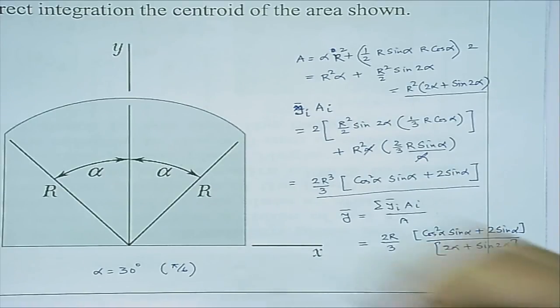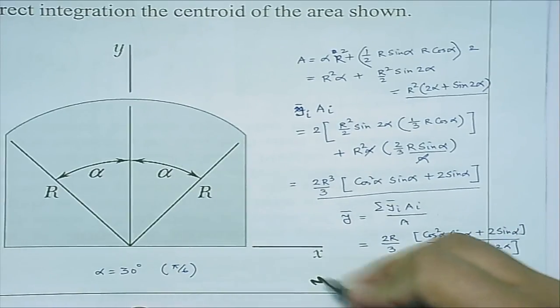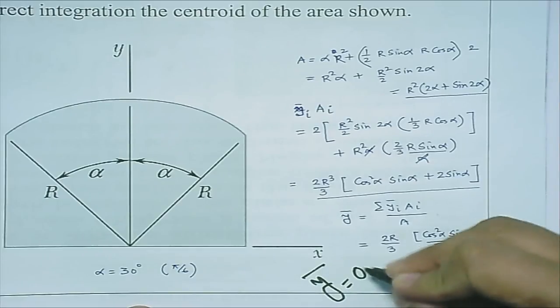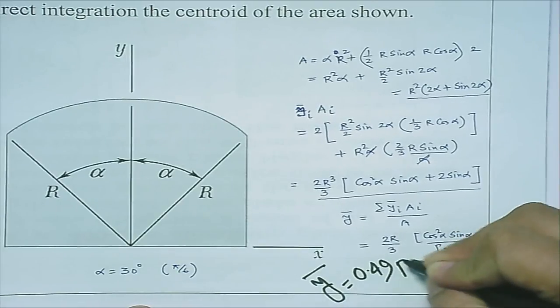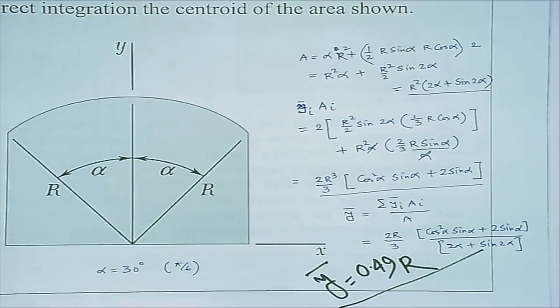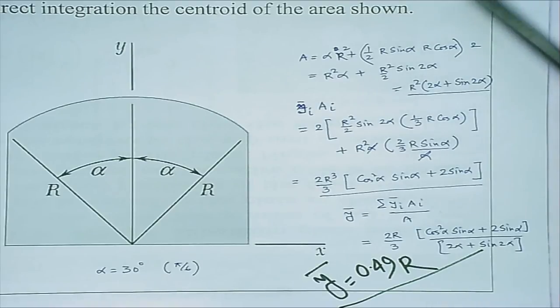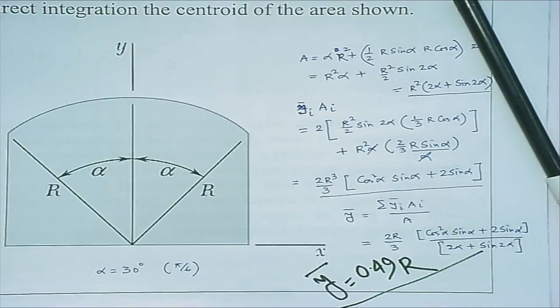Once you substitute alpha equals to pi over 6, the answer should be roughly r over 2. We can verify this problem using two different approaches.